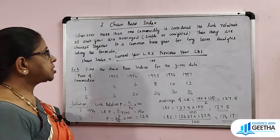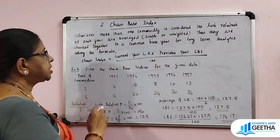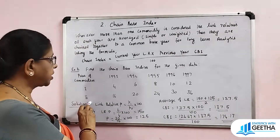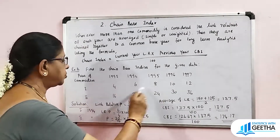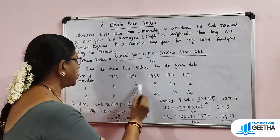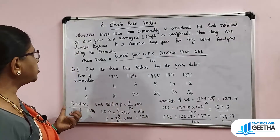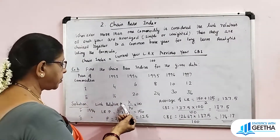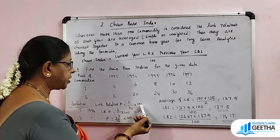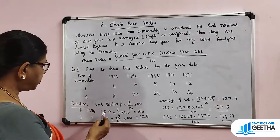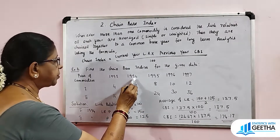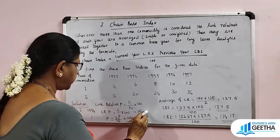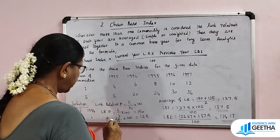Let's do an exercise. Find the chain-based index from the following data — prices of commodities. First, the solution: calculate the link relative using the formula P1 by P0 into 100. For 1990, the link relative for commodity one is 6 by 4 into 100, which is 150.